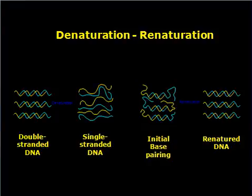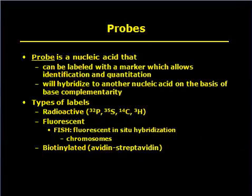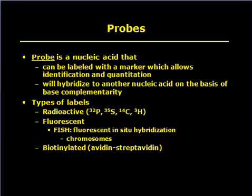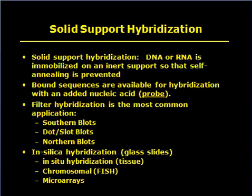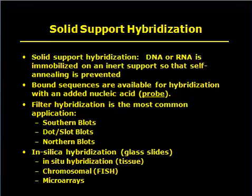A probe is a nucleic acid that can be labeled with markers, allowing identification and quantification when hybridized to another nucleic acid on the basis of base complementarity. Types of labels include radioactive and fluorescent labels, such as FISH — fluorescent in situ hybridization of chromosomes. Solid support hybridization involves immobilizing DNA or RNA on an inert support so that self-annealing is prevented, and systems are available for hybridization with an added nucleotide probe. Filter hybridization is the most common application.